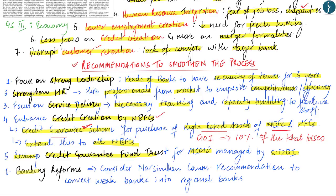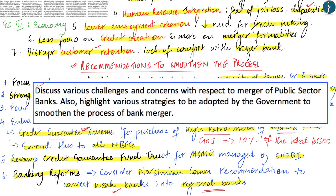The last recommendation is to carry out certain banking reforms. The author says the government should consider the recommendation made by the Narsimham Committee, which stated that certain weak banks should be converted into regional banks. For example, Bank of Maharashtra has a high regional concentration and could be turned into a vibrant regional bank to serve agriculture, trade, and commerce. Rather than just merging a weak bank with a strong bank, we can convert them into regional banks to better serve the demands of that particular region.